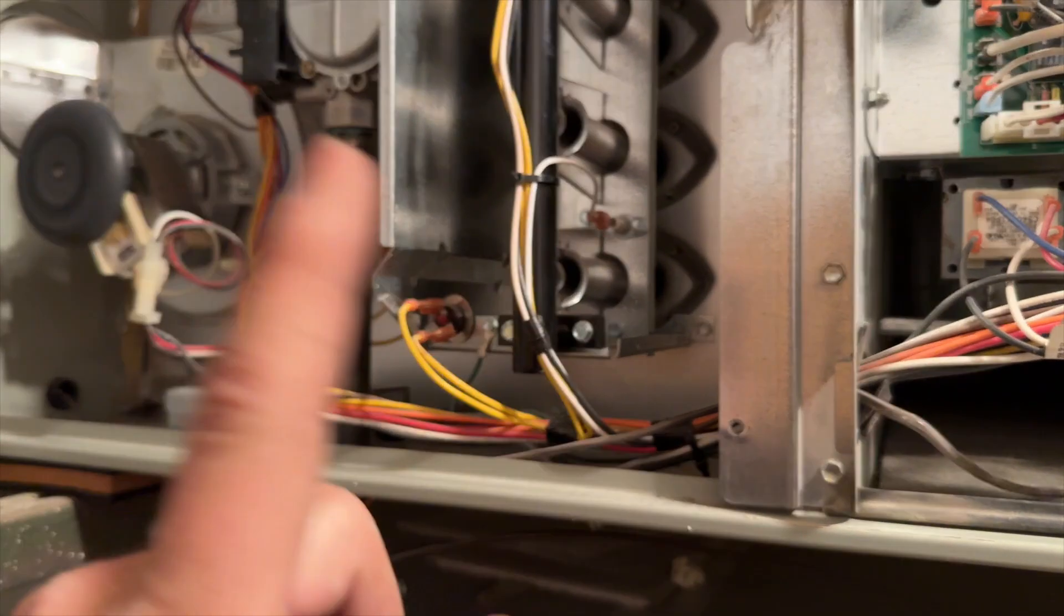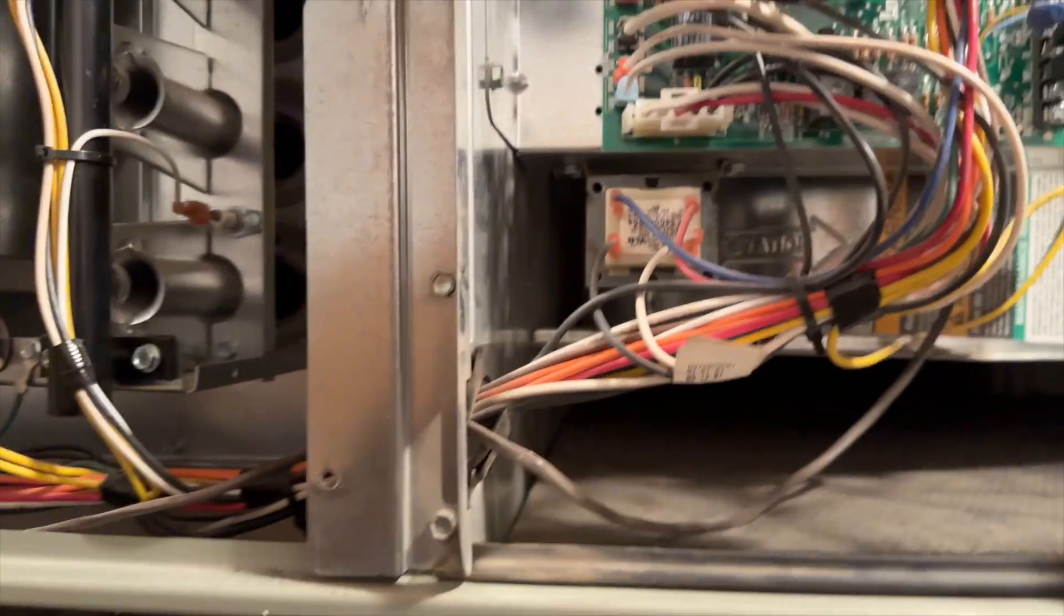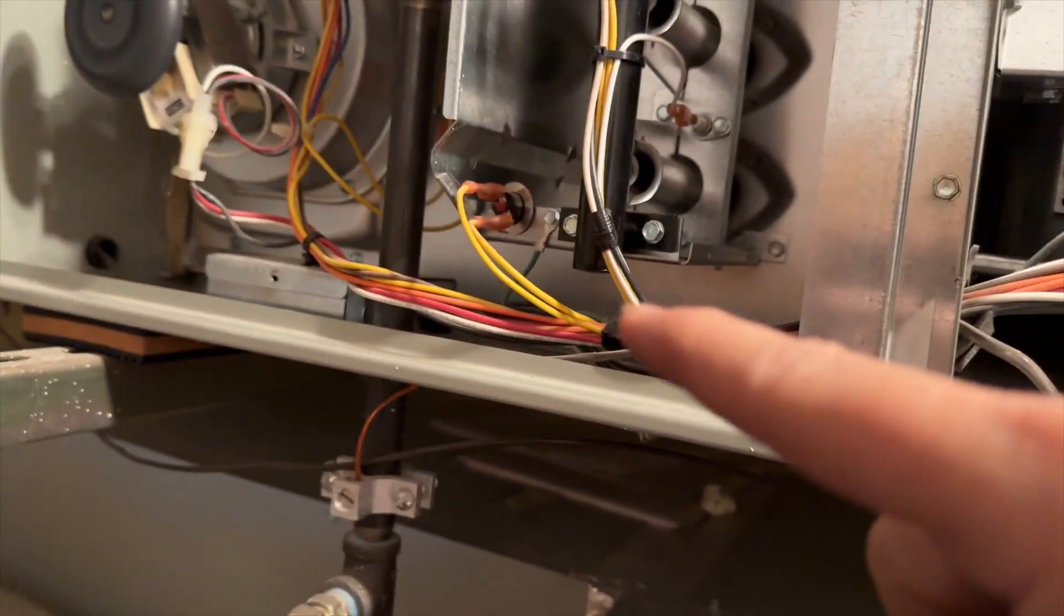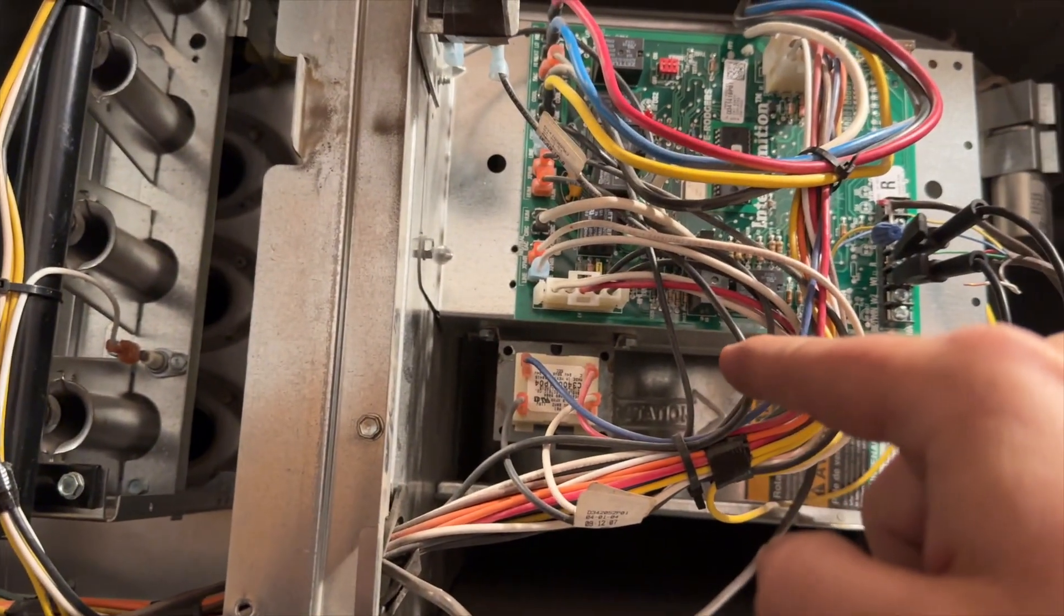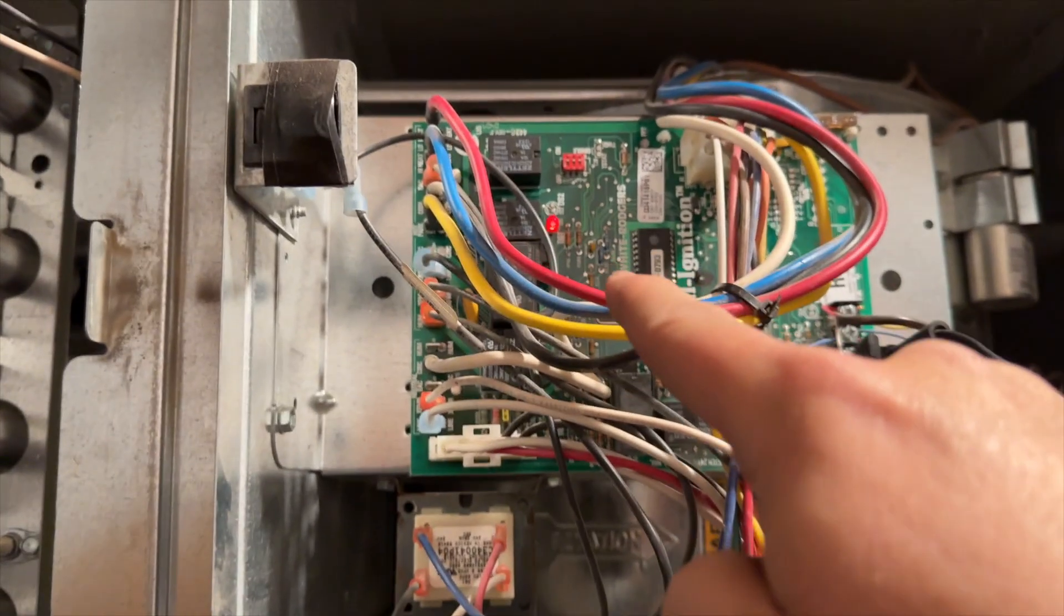So I've removed, I've restored high voltage. I had no call, but the inducer keeps running. I've reset the board. It was giving me normal. Now I'm calling for heat and I'm getting a flash code.